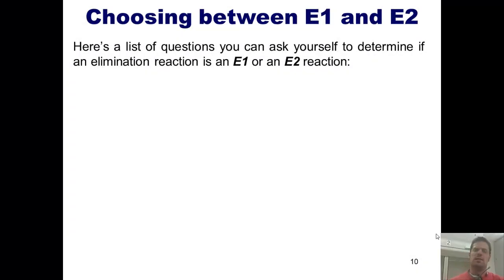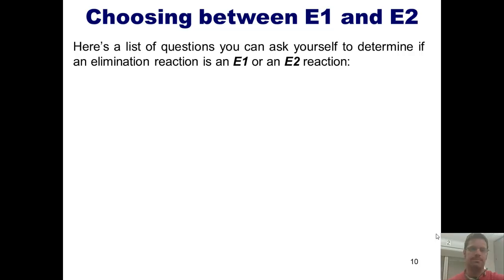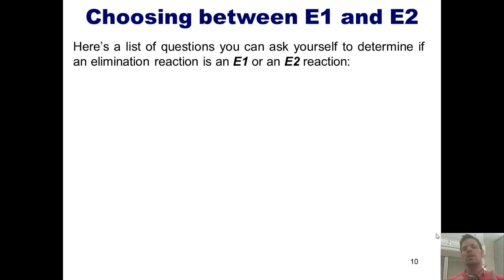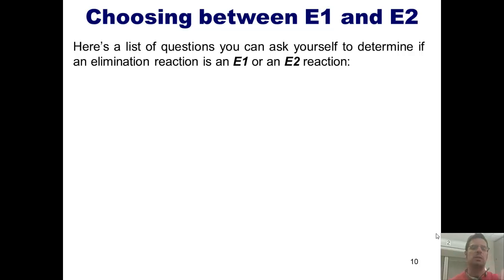As mentioned in our previous video, I've shown you the mechanisms for E1 and E2 reactions. This prompts the question: how can I distinguish between which one of those two will occur? I'm going to show you a list of questions you can ask and answer in a specific order to help determine whether your reaction is going to be E1 or E2. Here's a series of questions to ask if your reaction is under elimination conditions, not substitution conditions.